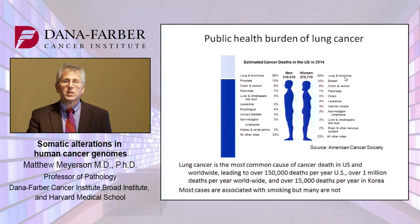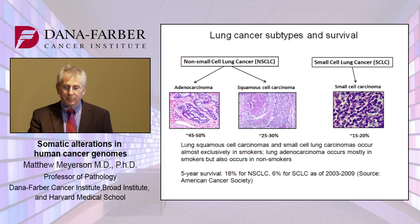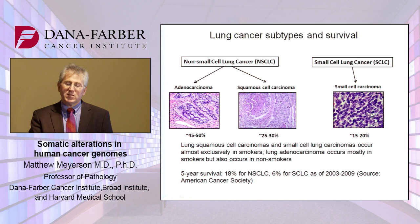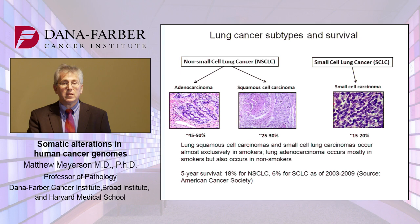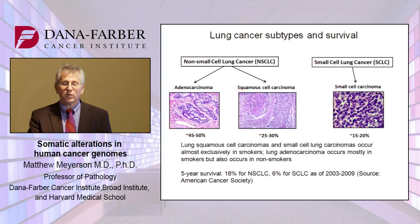Most cases of lung cancer are associated with smoking, but many are not. If we look at the subtypes of lung cancer, there are three major subtypes: adenocarcinoma, squamous cell carcinoma, and small cell lung carcinoma. Lung squamous cell carcinomas and small cell carcinomas of the lung occur almost exclusively in smokers. Lung adenocarcinoma occurs mostly in smokers, but also occurs in non-smokers. The five-year survival rate is on the order of 18% for non-small cell lung cancer, and on the order of 6% for small cell lung cancer, as of the 2003 to 2009 period. It's probably improved somewhat for non-small cell lung cancer since then, but we have a long, long way to go to improve the treatment of lung cancer.